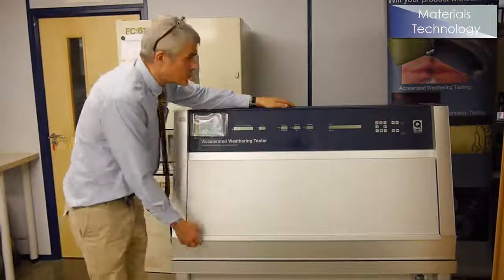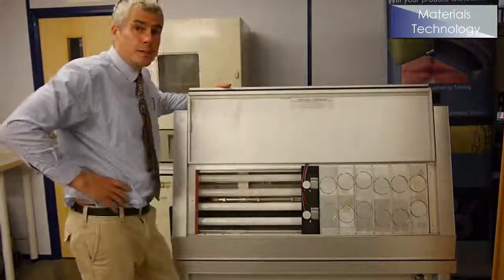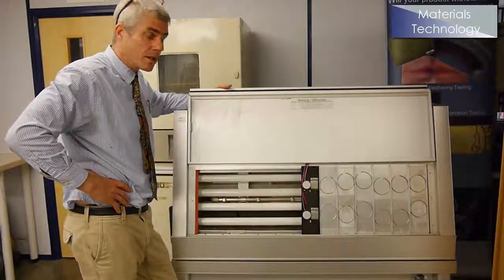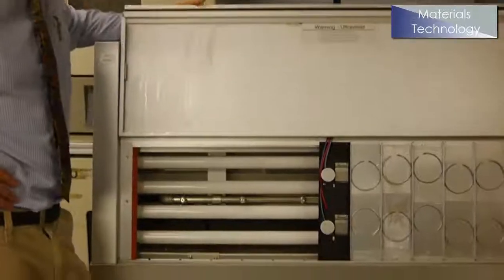So looking inside a QUV machine, you have a bank of fluorescent tubes. These produce the UV light for the test. Also at the bottom here, there is a water tank.